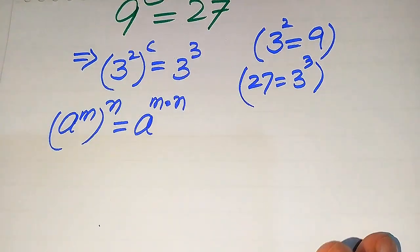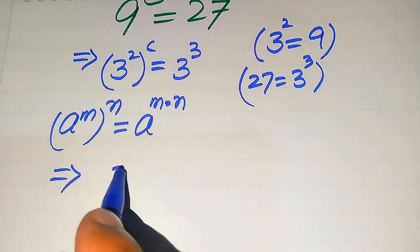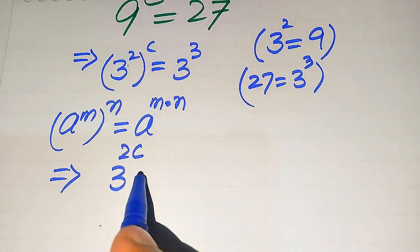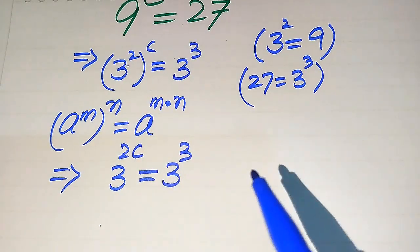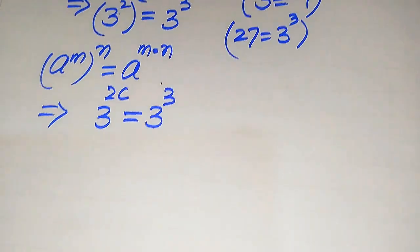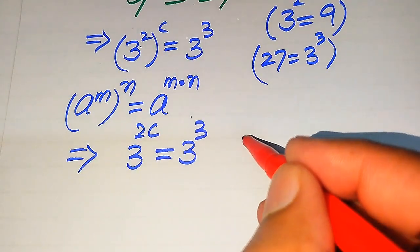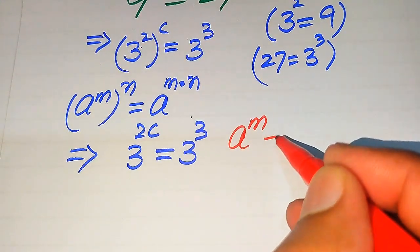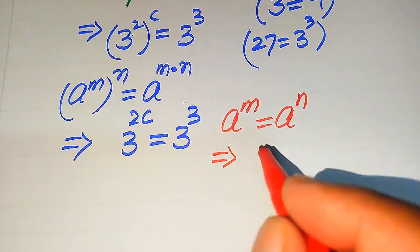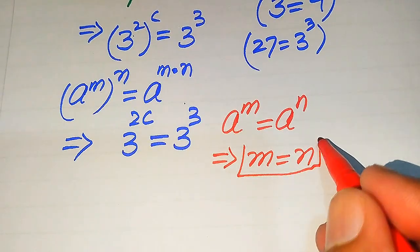When we apply this formula to the left hand side, we multiply the two exponents: 2 multiplied by C becomes 2C, so we have 3 to the power of 2C equals 3 cubed. In the next step, since the bases on both sides are the same, we apply another exponent law: if A to the power of M equals A to the power of N, and the bases are the same, we equate the exponents to get M equals N.